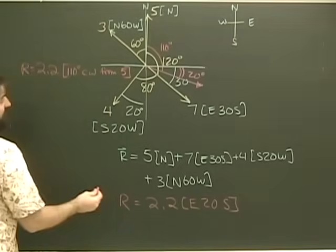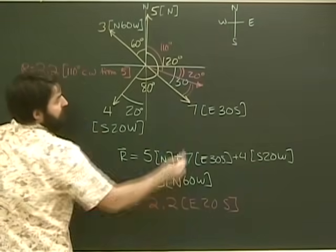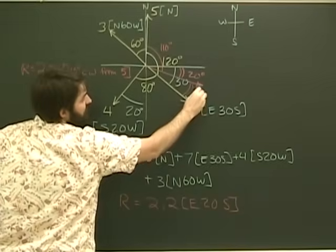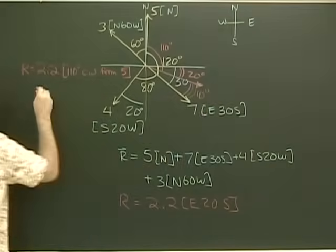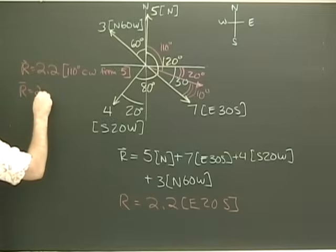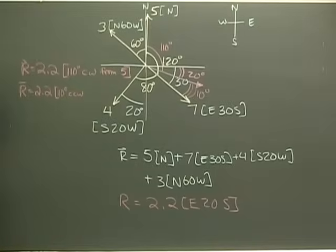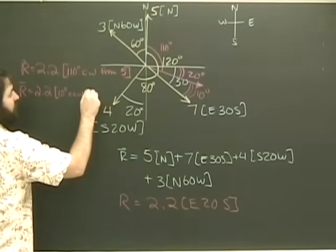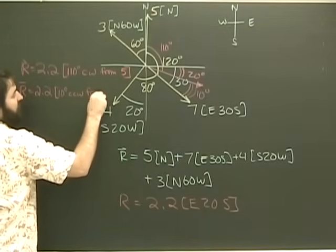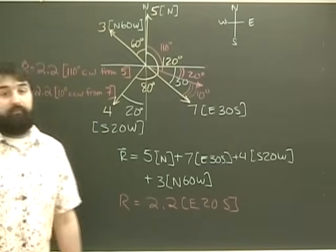Of course, there's other possibilities. I could measure this angle instead. If this angle is 20, this angle is only 10. So, another equivalent expression would be 2.2, 10 degrees counterclockwise from the 7 unit vector.